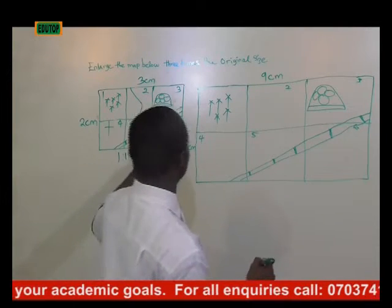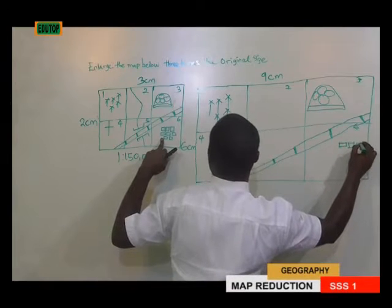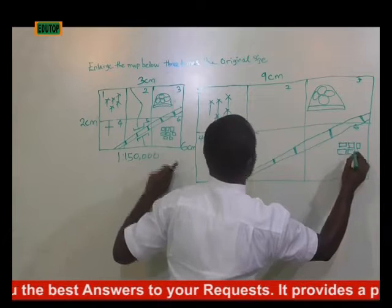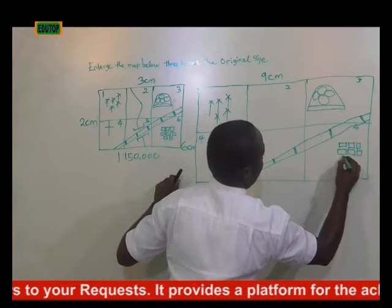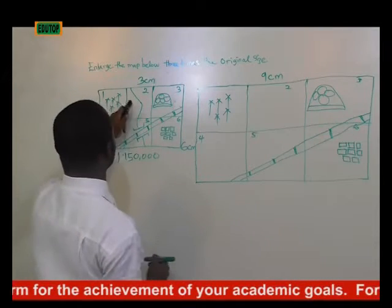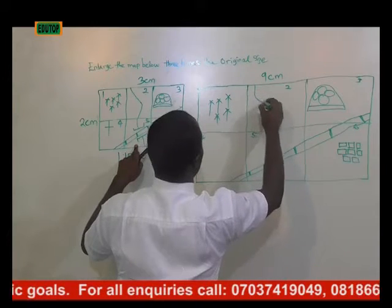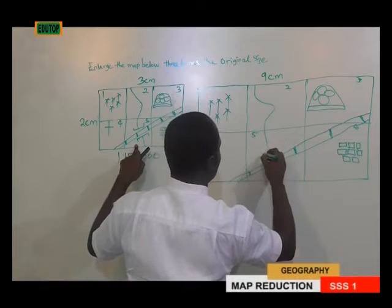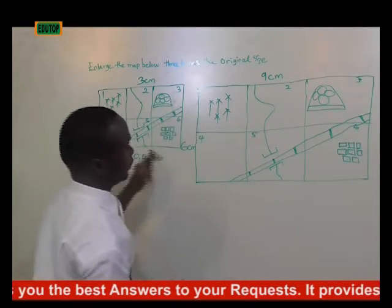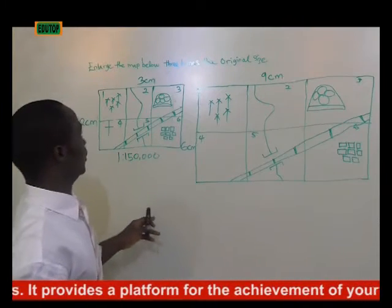The next feature here is the settlement, which is concentrated at the sixth grid. After that, the next feature is the river and the bridge — the river runs from grid two down to five. This symbol is usually used for convex bridges in map reading.